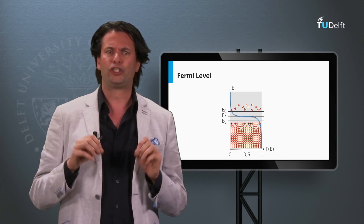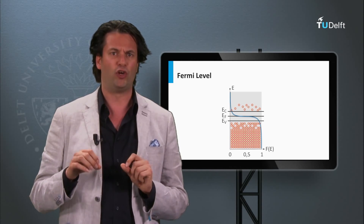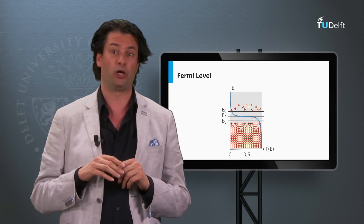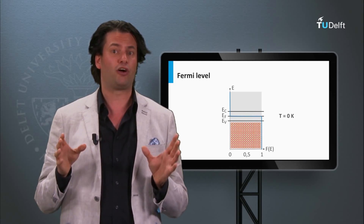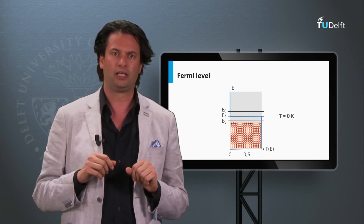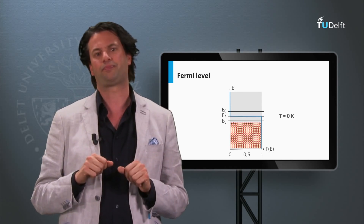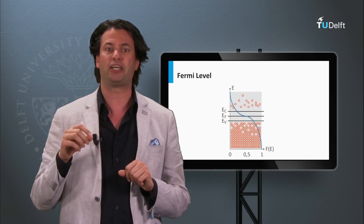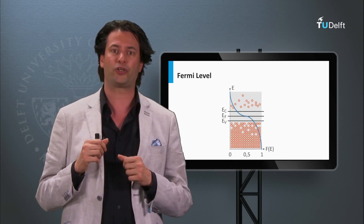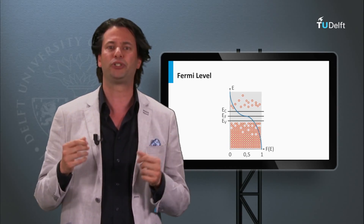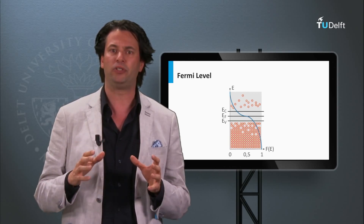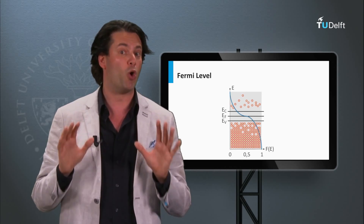In general, the Fermi-Dirac function shows that the energy levels in the conduction band have a low probability to be occupied, while the energy levels in the valence band have a high probability to be occupied. At absolute zero — a temperature of 0 Kelvin or minus 273 degrees Celsius — all electrons fully occupy the valence band, and the semiconductor material is not conductive. If we increase the temperature, the shape of the Fermi-Dirac function broadens around the Fermi level and some electrons have the chance to occupy the conduction band as well. The higher the temperature, the more electrons can occupy the conduction band. This demonstrates the physical principle that if you heat up a semiconductor material it becomes more conductive.